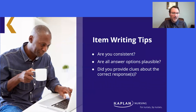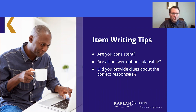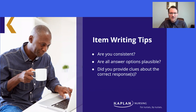Now, let's talk about a few item writing tips. First, be consistent. If the first drop-down in your closed item has three options, be consistent and provide three options in subsequent drop-downs in the same question. Second, ensure all answer options are plausible and grammatically correct. Third, determine if you unfairly provided clues about the correct responses.